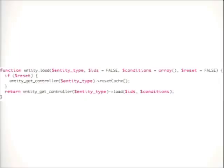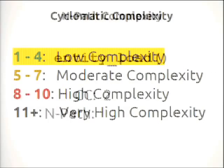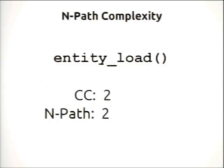The first function I want to analyze is entity_load from Drupal 7. Really simple — it has one if statement and returns. Cyclomatic complexity of two, which is low complexity. And n-path complexity of two. Awesome — this is what you want.